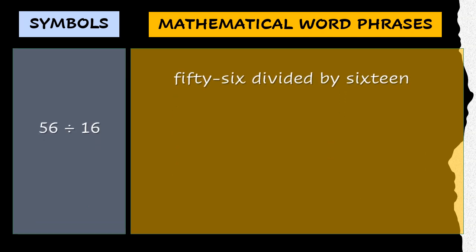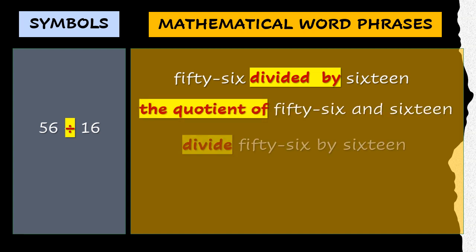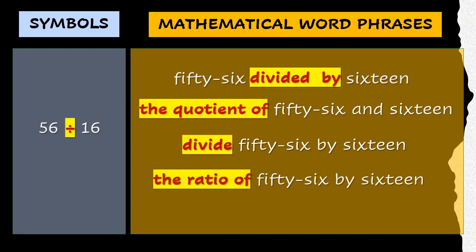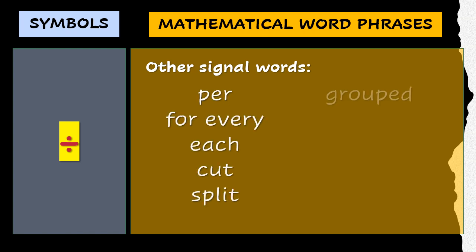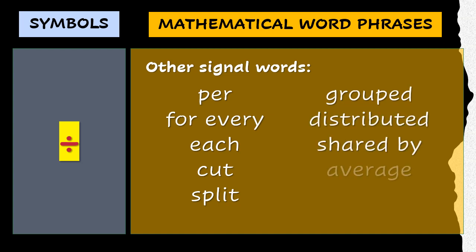Let's move on to division. The quotient of, divide, and the ratio of all refer to division. Other signal words for division are per, for every, each, cut, split, grouped, distributed, shared by, averaged, and packed into.